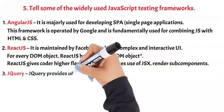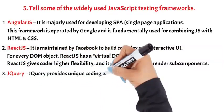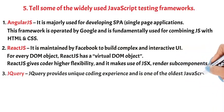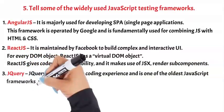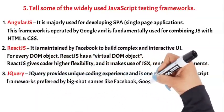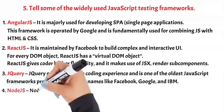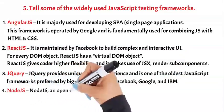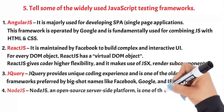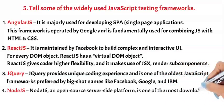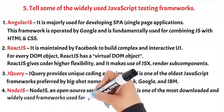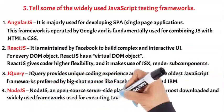3. jQuery — provides a unique coding experience and is one of the oldest JavaScript frameworks, preferred by big names like Facebook, Google, and IBM. 4. Node.js — an open-source, server-side platform and one of the most downloaded and widely used frameworks for executing JavaScript code.